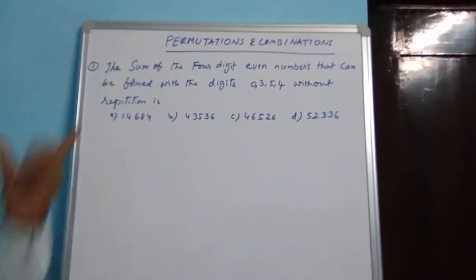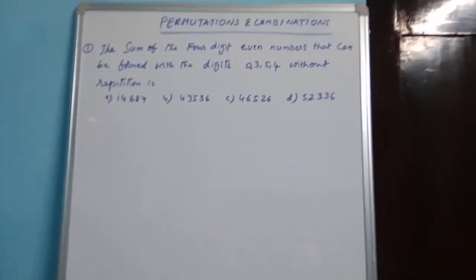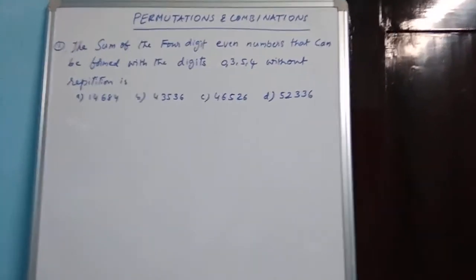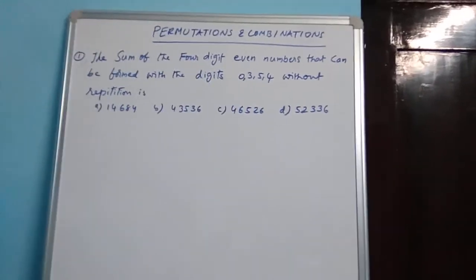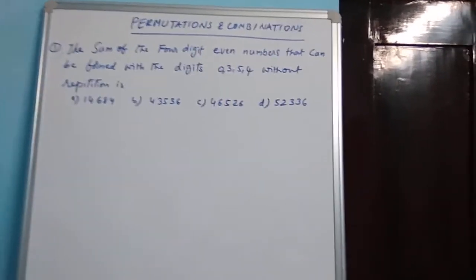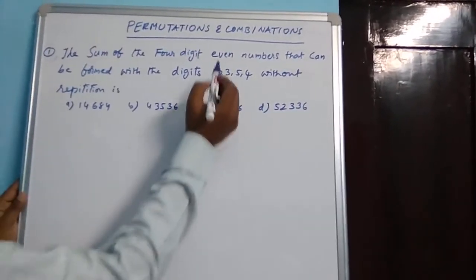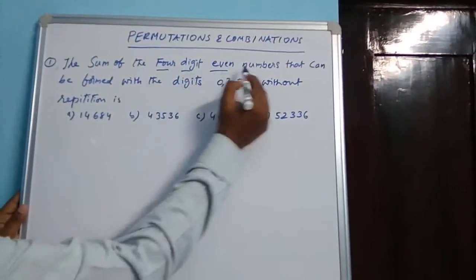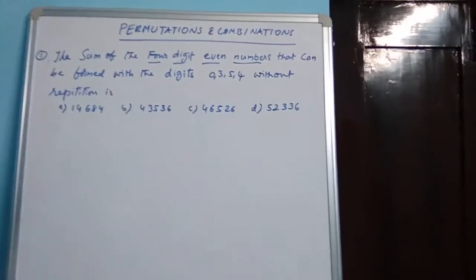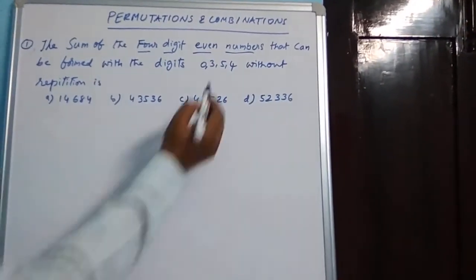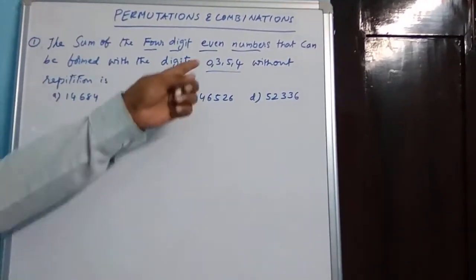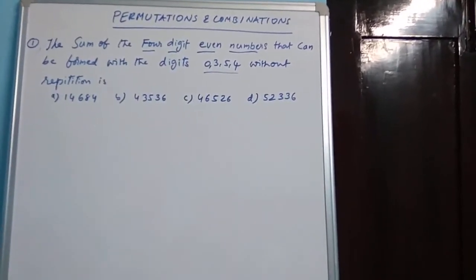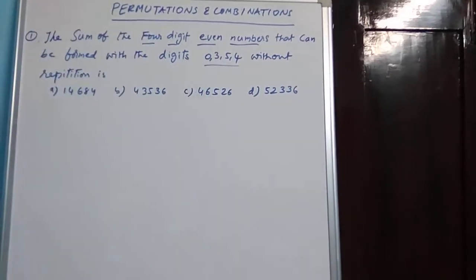First question: find the sum of four-digit even numbers that can be formed with the digits 0, 3, 5, 4 without repetition. He is asking to find the sum of four-digit even numbers using the digits 0, 3, 5, 4. Since 0 is in the given digits, we have to be very careful in case of 0.